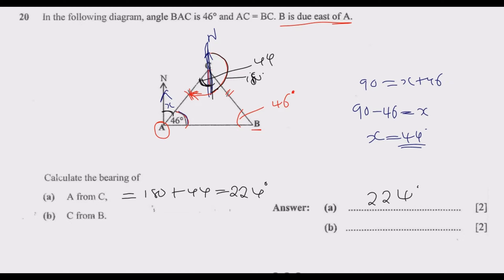Then we look at question b, C from B. We are at B, drawing a north here, then turning to face C. We know this is 46, then this should also be 44. Because B is due east of A, and these north lines are parallel, if this angle is 90, then this angle should also be 90.